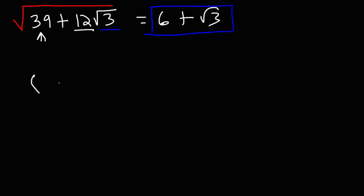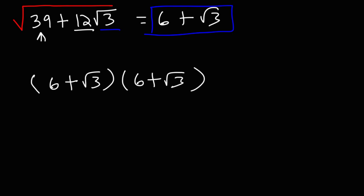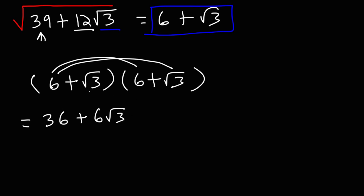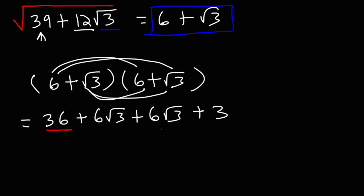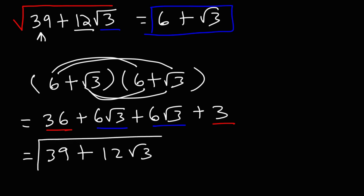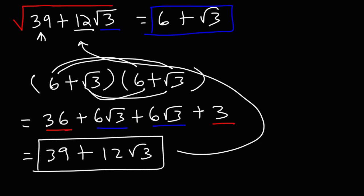Now we know the answer is going to be correct, but let's go ahead and make sure. Multiply (6 plus the square root of 3) times itself. 6 times 6 is 36. Then 6 times the square root of 3, and another similar term. The square root of 3 times the square root of 3 is simply 3. So 36 plus 3 is 39. And 6 root 3 plus 6 root 3 is 12 root 3. We get our original expression, so our final answer is indeed 6 plus the square root of 3.